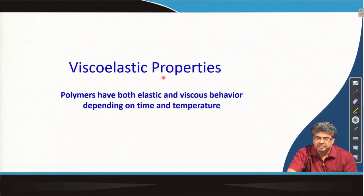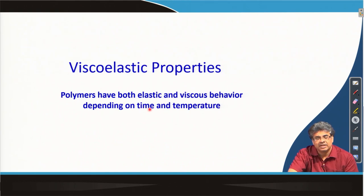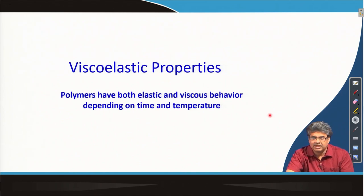We will now move to viscoelastic properties. This is a very important property for polymers, based on the fact that polymers have both elastic and viscous behavior which depends on time and temperature. Depending on how fast the polymer is deformed and what the temperature of deformation is, the polymer may behave dominantly as an elastic solid or it may behave dominantly as a viscous liquid.